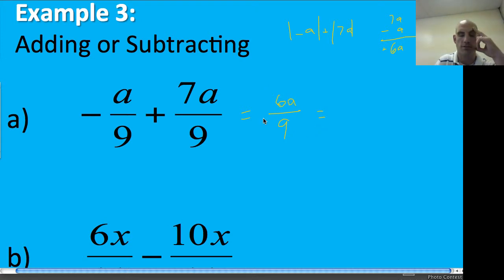Now you're thinking to yourself, normally if it was just 6 ninths, I could reduce it. You can still reduce it because really remember this is 2 times 3 times A over 3 times 3. Cross out some of these threes. I get 2A over 3. That's all there is to it.